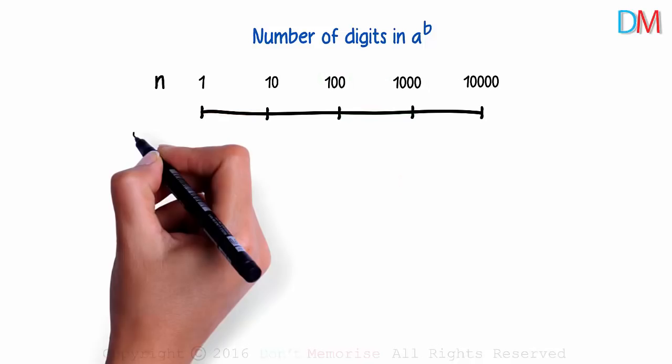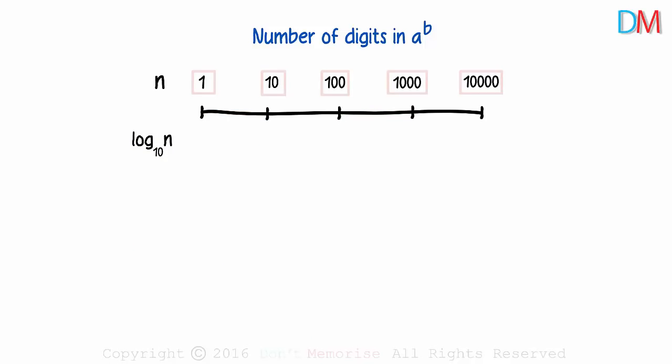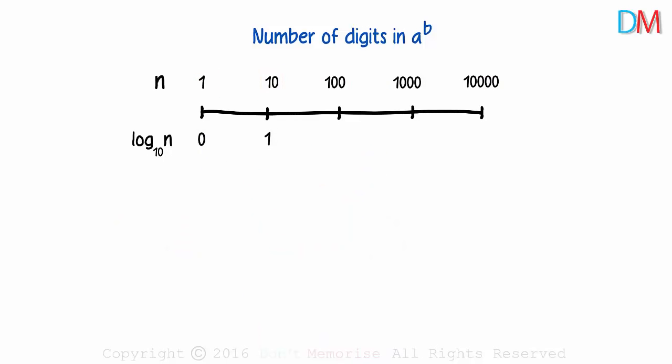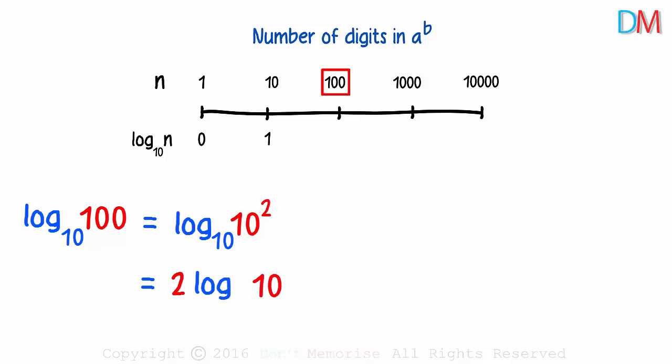Now what if we find the log to the base 10 of these numbers? The log of 1 is 0. The log of 10 to the base 10 will be 1. What will be the log of 100 to the base 10? It will be the log of 10 squared to the base 10. That will equal 2 times log of 10 to the base 10, which equals 2.